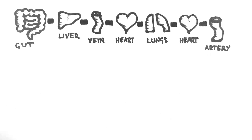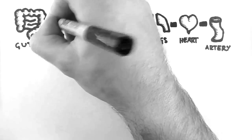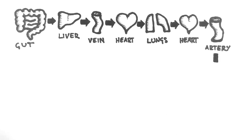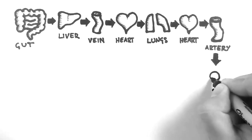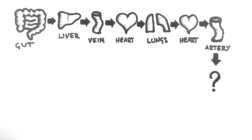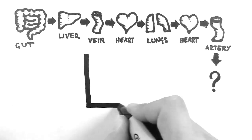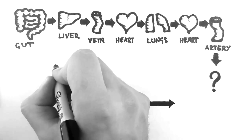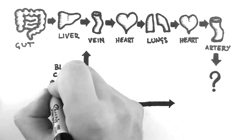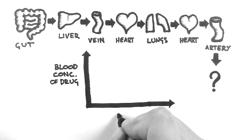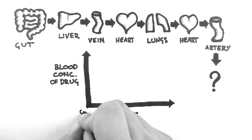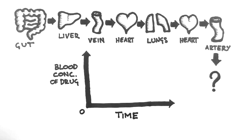What we are going to do is place drugs into different parts of this system, and measure their concentration in the arterial circulation over a period of time. I'll draw a set of axes: on the y-axis we have blood concentration of drug, and on the x-axis we have time. We'll begin with the most common route of drug administration, which is orally.